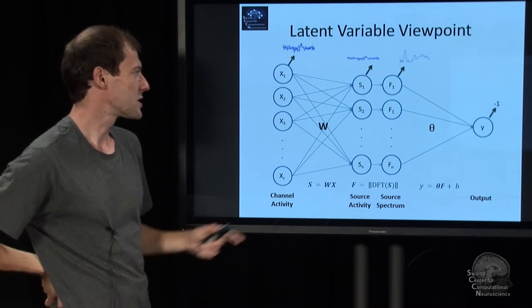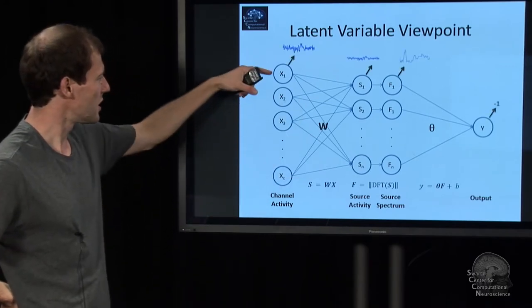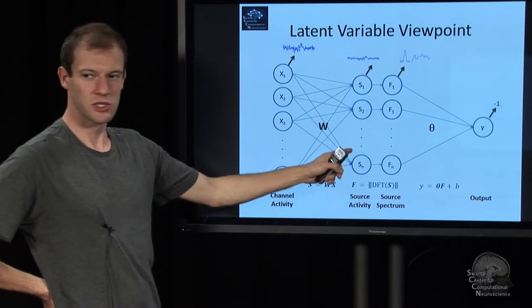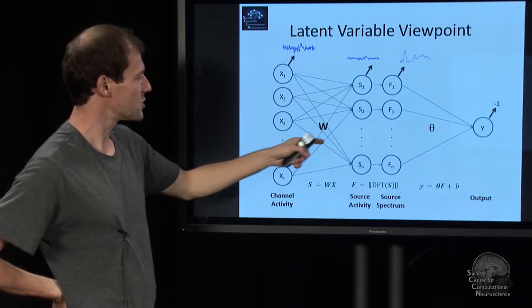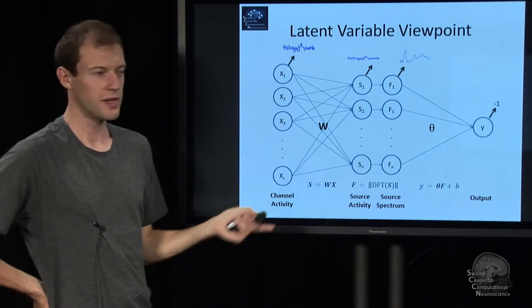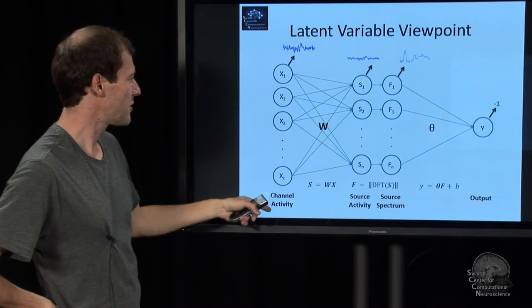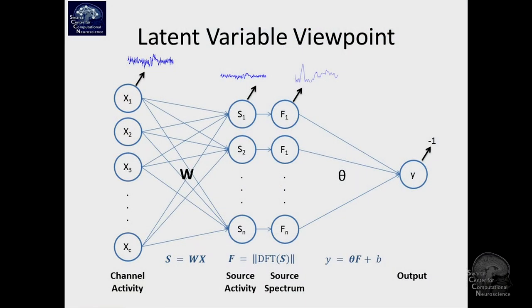And so for this reason, you basically need at least two linear maps: the spatial filter and then the classifier at the end. And if we plot this as a graphical model, I have multiple channels. My source time courses, and between them there is some relationship. It's the W, linear map.